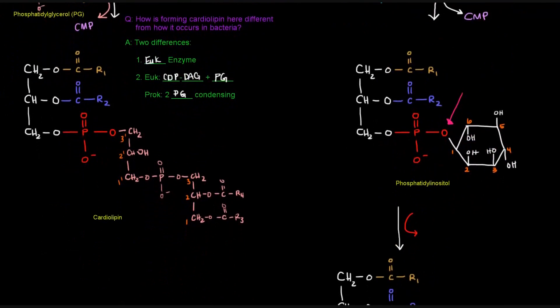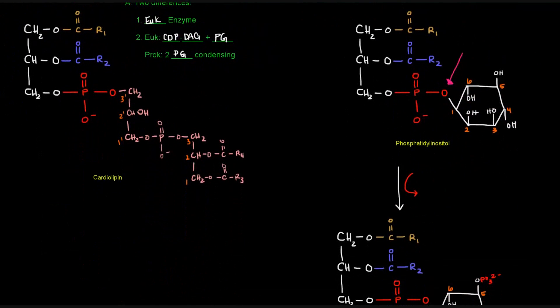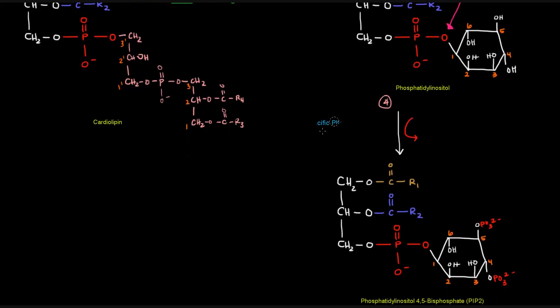And now, that phosphatidyl inositol can be modified in our step four, by specific phosphatidyl inositol kinases, which will add phosphates to carbons, or to the OHs on carbon four and five of inositol.